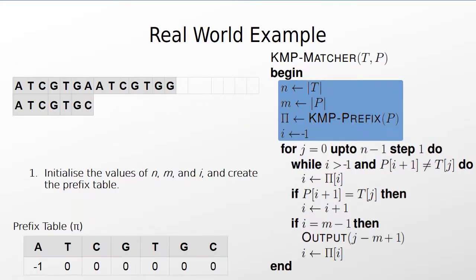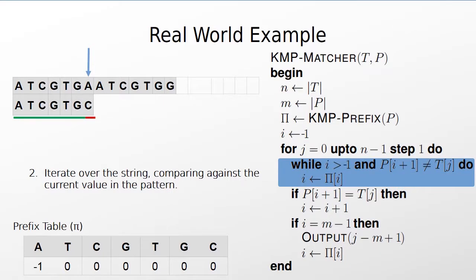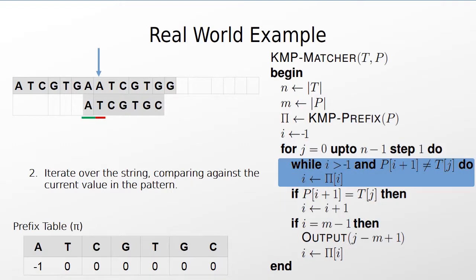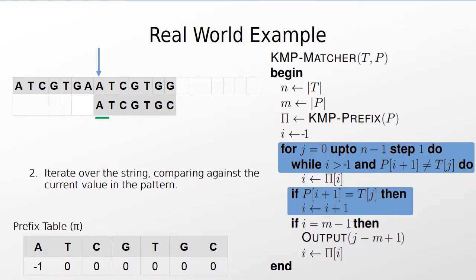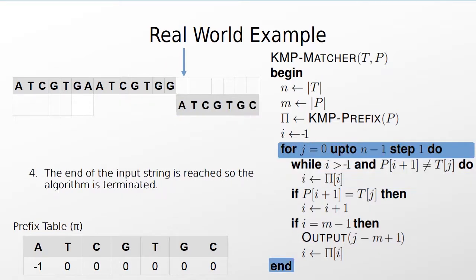As before, we initialise the values of n, m, and i and create the prefix table. We then begin iterating over the input string. We match the entire pattern to the input string except for the last character. 'a' and 'c' do not match, so we use the prefix table to set i to point at the first character, as the value of the last 'c' in the prefix table is 0. We only have one more match before a mismatch occurs, and again we set i to point at the first character. Then once again we match the entire pattern except for the last character. We use the prefix table again to set i when 'g' and 'a' do not match. We've now reached the end of the input string, so the algorithm terminates.